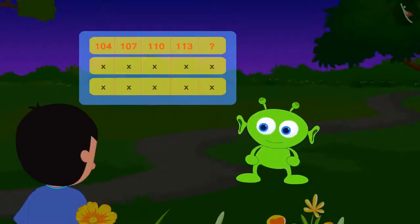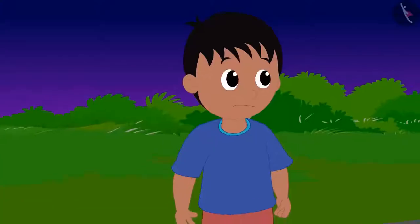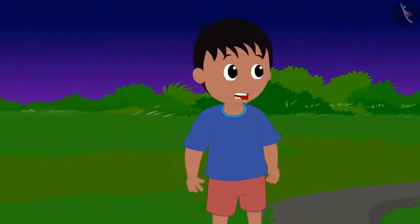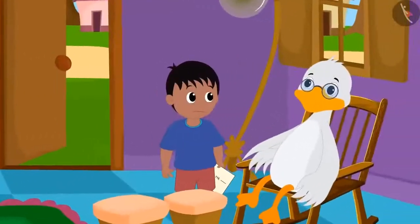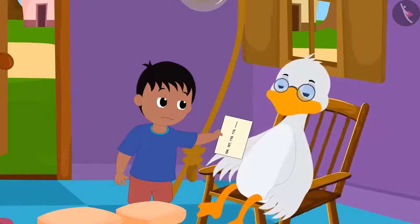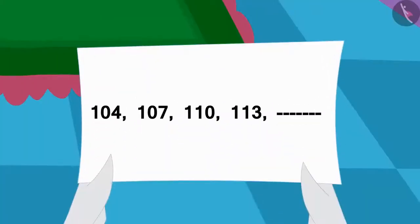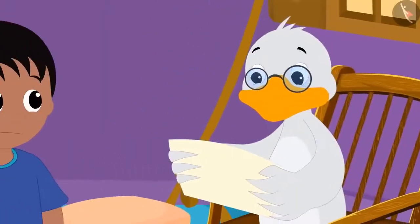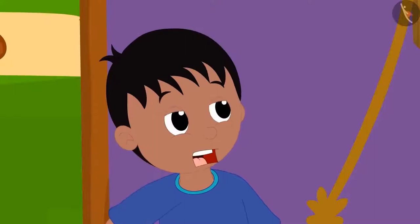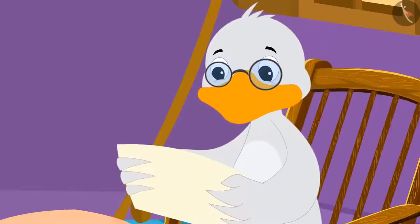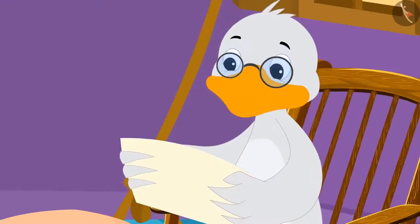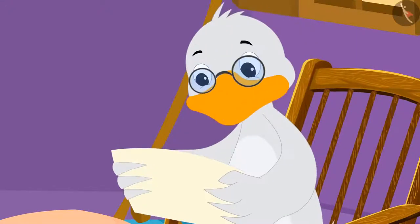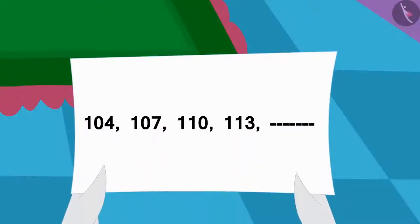This is a strange code. Raju wrote the code on a paper and ran fast to Big Mouth Duck Uncle in search of the answer. The uncle said: this looks like a number pattern. A list of numbers that follows a certain order or pattern is called a number pattern. Here's your number pattern.